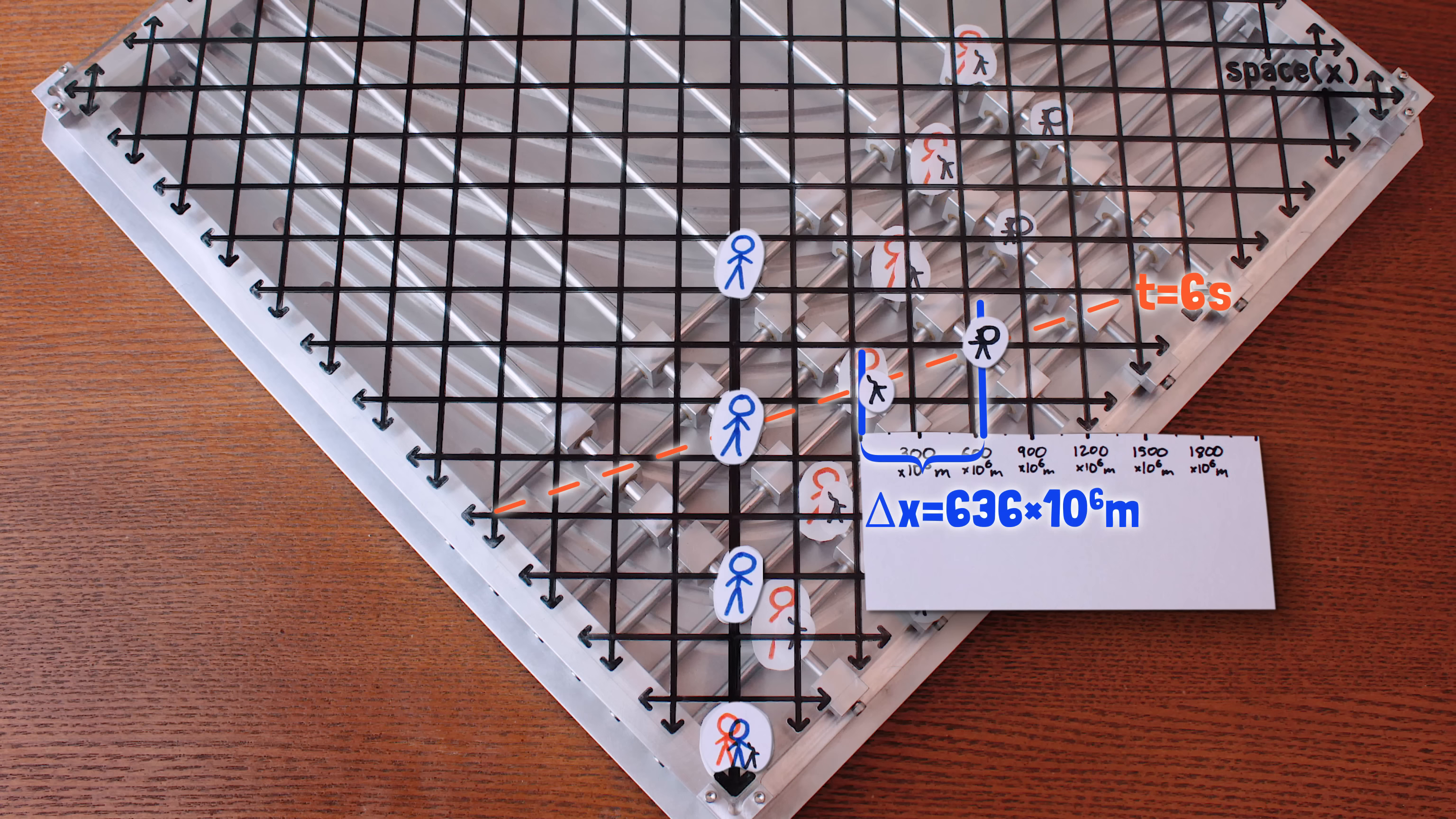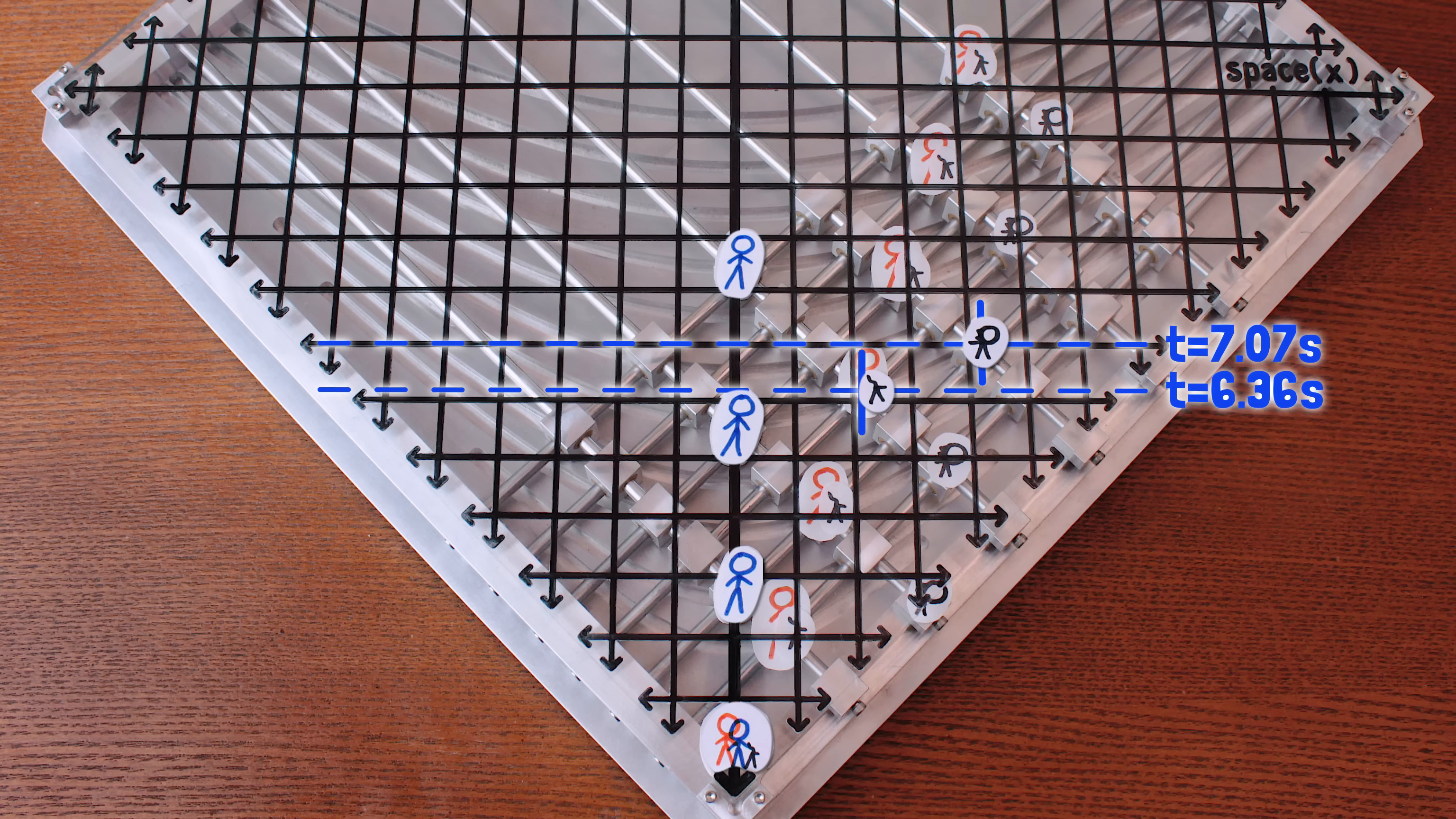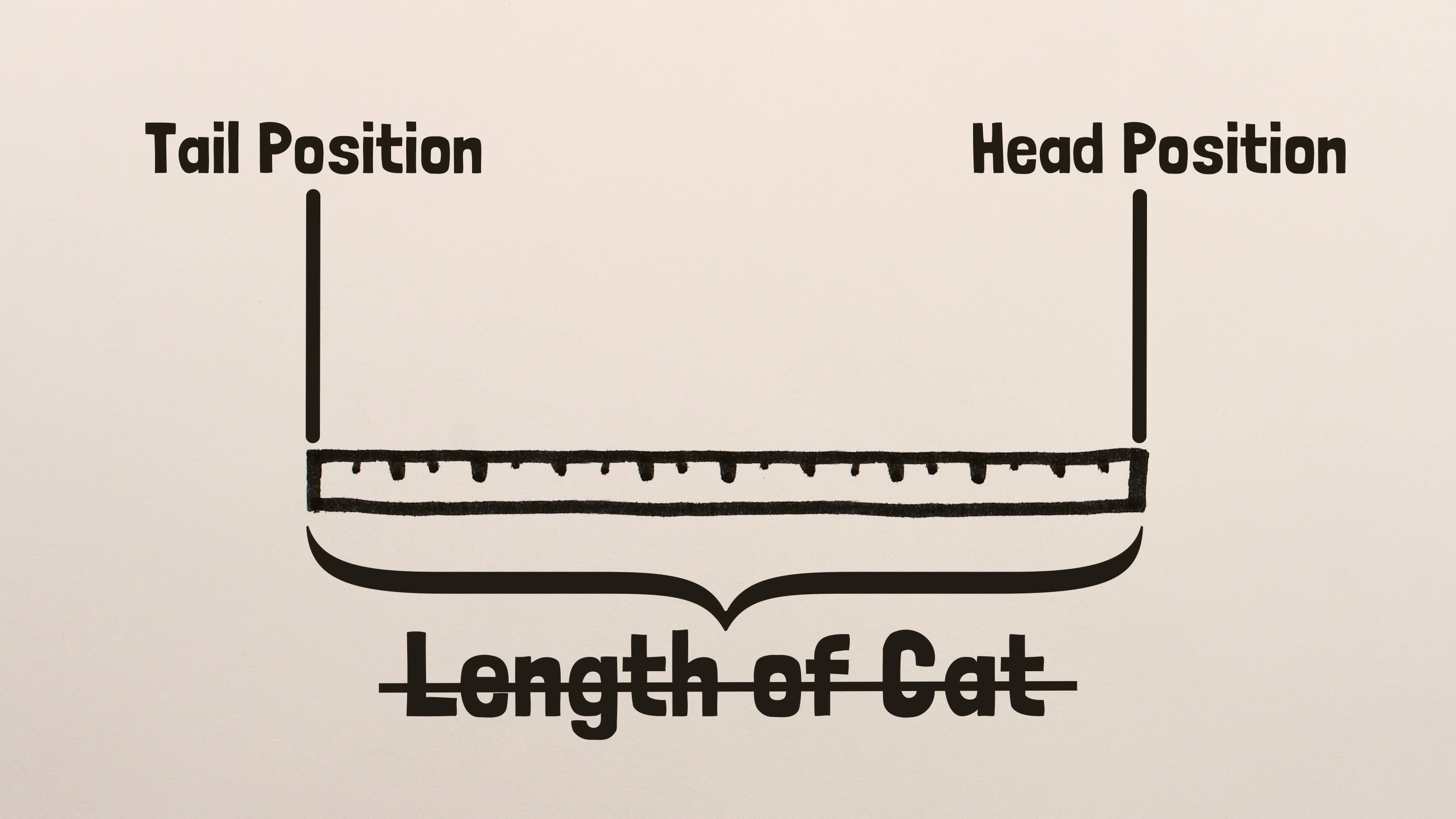However, this dilated distance doesn't represent the length of the cat from your perspective, because these measurements of the positions of its head and tail no longer happen at the same time, and the cat moves in between when the measurements are taken. That's what it means to have a slanted worldline. You're changing your position as time passes, aka moving. And if something moves while you're measuring it, that measurement doesn't represent its length.